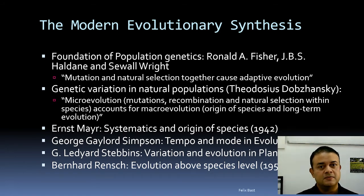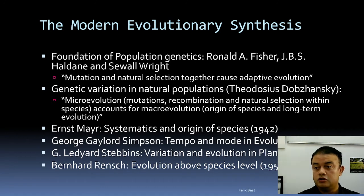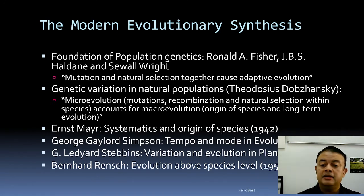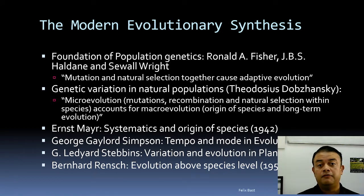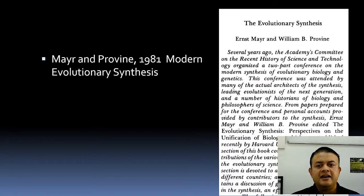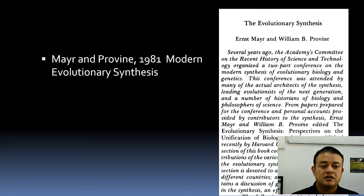Ernst Mayr, the famous German biologist, wrote 'Systematics and the Origin of Species' in 1942. G.G. Simpson's 'Tempo and Mode in Evolution' came in 1944, Ledyard Stebbins' 'Variation and Evolution in Plants' in 1950, and Bernhard Rensch's 'Evolution Above the Species Level' in 1959. These are key foundational books. Julian Huxley's book launched the synthesis, and Mayr and Provine wrote a famous essay in 1981 that conceptualized the entire idea of evolutionary synthesis.